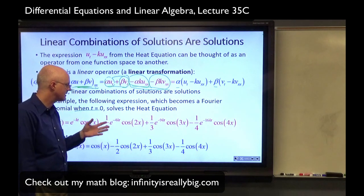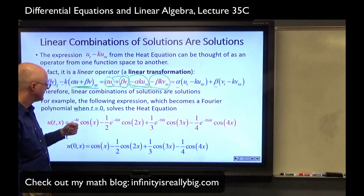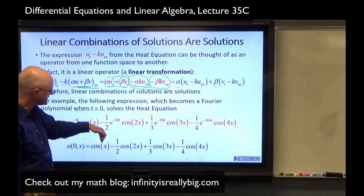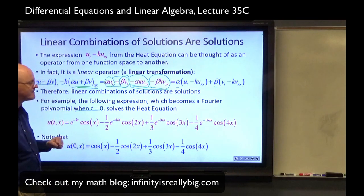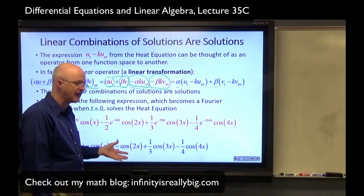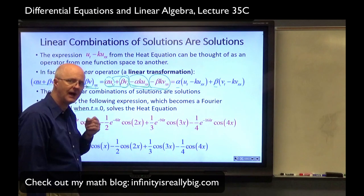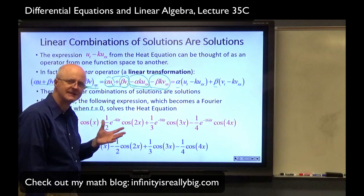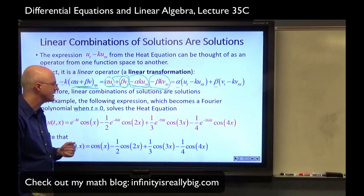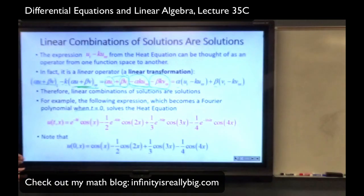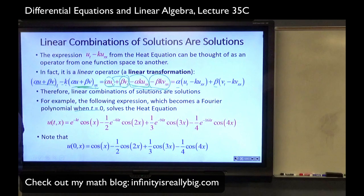Note that when you plug in T equals zero, it becomes a Fourier polynomial like we talked about in lecture 34B as a function of X. A combination of cosines in this case of different frequencies with the coefficients of X being one, two, three, then four, making this whole thing be periodic with period two pi. Now you might wonder what about other periods besides two pi? There are ways to adjust it. I'm not going to talk about them in this lecture. So we'll end here now looking at the Mathematica.